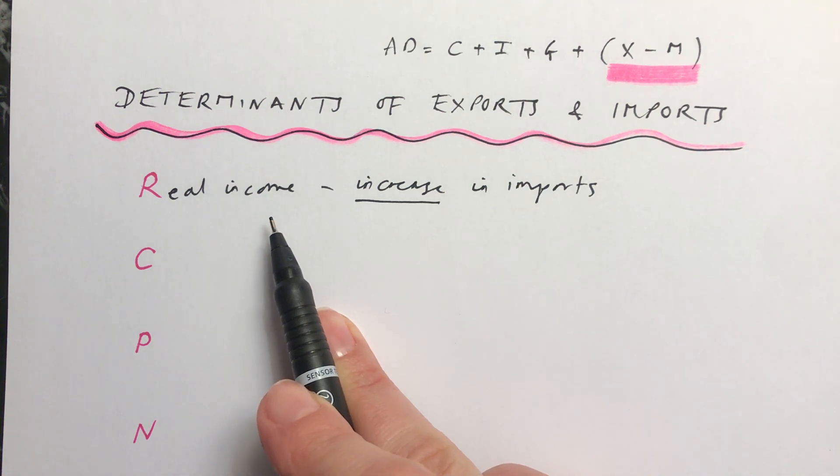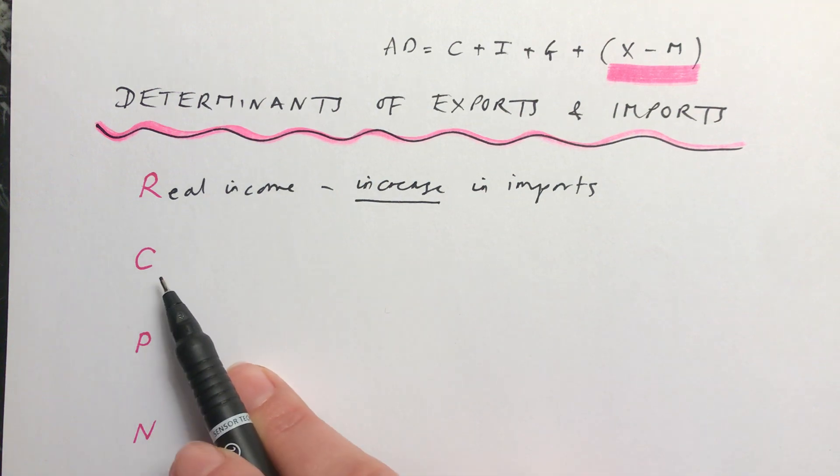You'll see an increase in imports because in your country people have more money and therefore they're shopping more, and a lot of the things that they buy in the shops will have been imported from another country. The opposite: if we have a fall in incomes, then people in the economy won't be shopping as much, and therefore you'll have a decrease in imports.